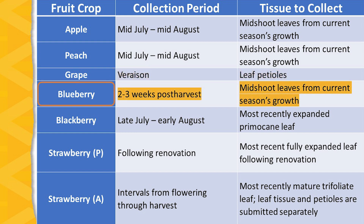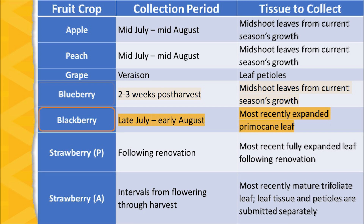With blueberries, the collection period is two to three weeks post-harvest and the type of tissue sampled is mid-shoot leaves from current season's growth.